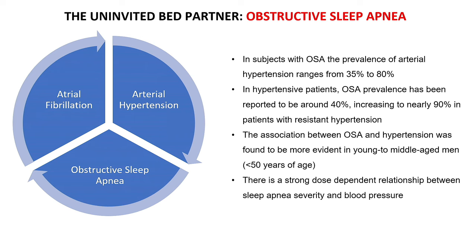It is clear that atrial fibrillation, arterial hypertension, and sleep apnea share several risk factors and are three conditions that should be managed together because they can all increase the overall risk profile of our patient. In patients with sleep apnea, the prevalence of hypertension can be as high as 80%. Conversely, in hypertensive patients, sleep apnea prevalence can be around 40%, but in patients with resistant hypertension it can increase up to 90%. The association between the severity of sleep-disordered breathing — usually represented by the apnea-hypopnea index (AHI) — and blood pressure is quite a tight dose-dependent relationship.